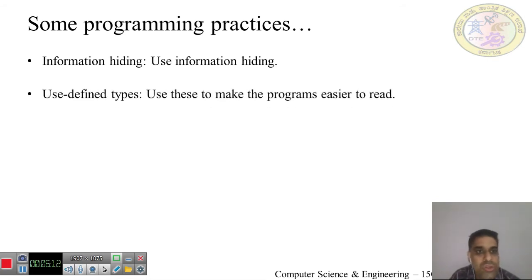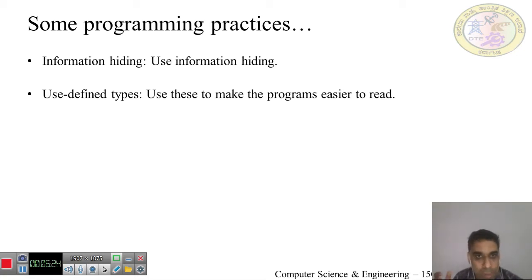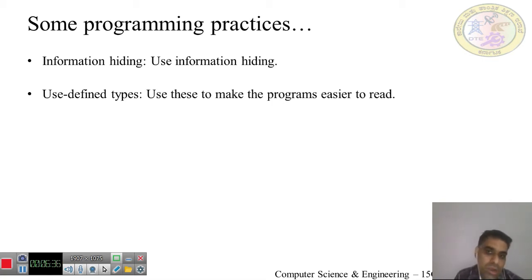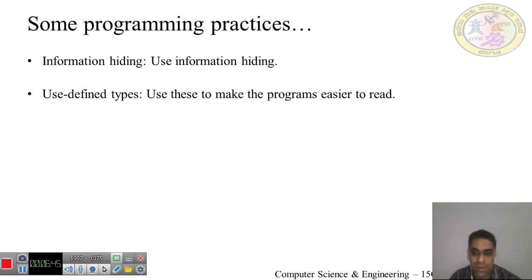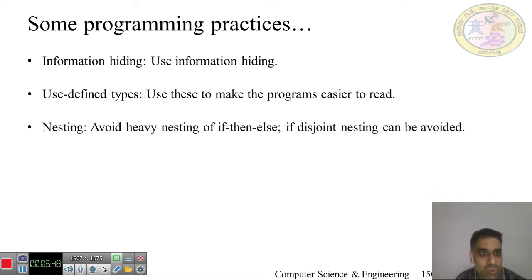The next guideline is user-defined types. We should make heavy use of user-defined types such as enum, class, structure, and union. These make your code easier to write and easier to understand, which is why we should use these to make programs easier to read.